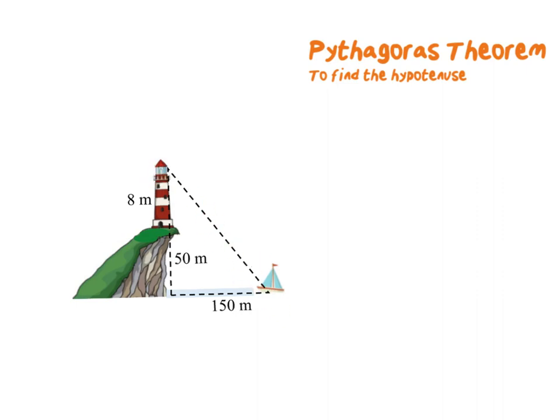What is the distance between the ship and the top of the lighthouse? We can use Pythagoras to work this out. We are going to say 58 meters squared (because remember it's 50 and 8 together, the cliff and the lighthouse) plus 150 meters squared which the ship is away. If I add these together I get an amount of 25,864.